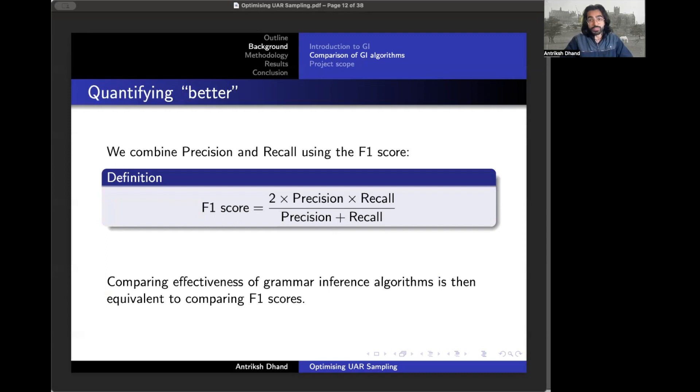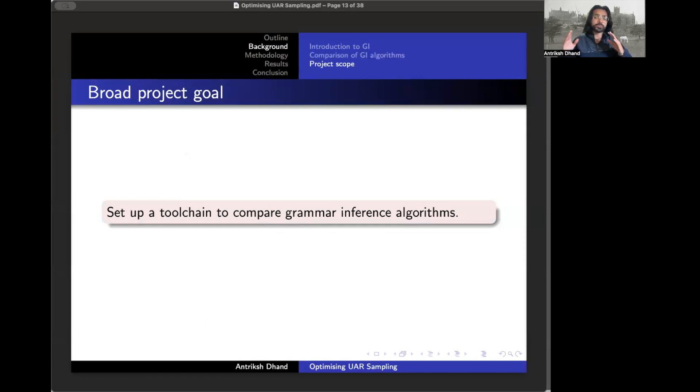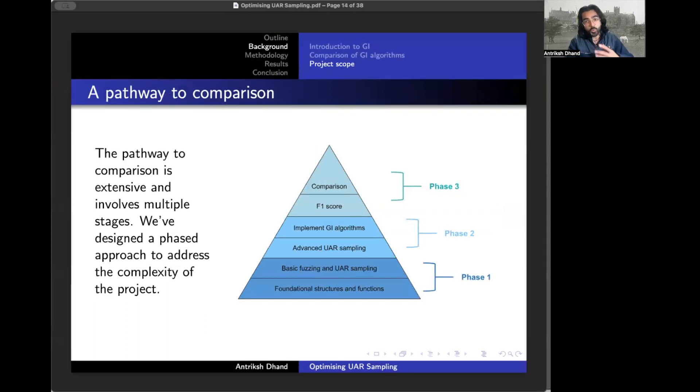After we obtain values for precision and recall, we can then combine them using the F1 score. And so if you wanted to compare the effectiveness of grammar inference algorithms, we can just compare the grammar inference algorithms F1 scores. So this is exactly our project goal. We want to set up that entire tool chain to be able to compare two algorithms. As I've just said though, this is quite a long project. Due to the short time we had over the summer, we've actually split the project up into multiple stages. And for this internship, we've decided to focus on phase one, which was just to build the foundational structures and functions for working with the grammar. And to prove that those foundational structures work, we wanted to also program the uniform at random sampling.